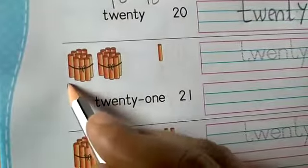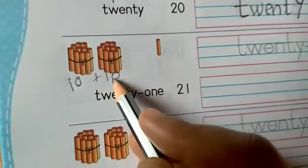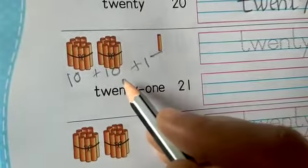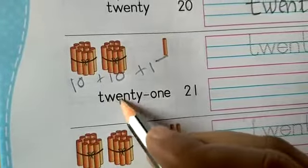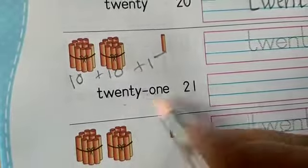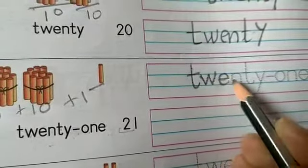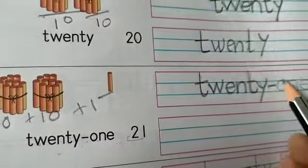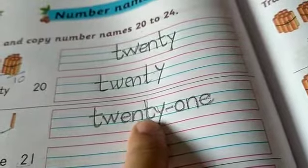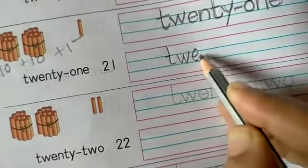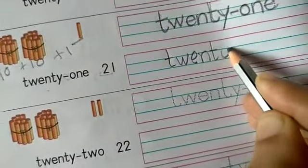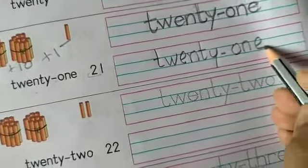Next one is here. One 10 bundle plus one 10 bundle — two 10s bundle. And one is extra, plus one. So it becomes 21. Spell: T, W, E, N, T, Y, O, N, E — 21. First trace the 21, then rewrite in the below column.